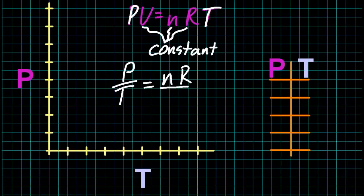So if I rearrange it, P over T is nR over V, and that's going to be a constant. N and R and V are all constants. It's going to be an unchanging number. You can also think about it as P is proportional to T.